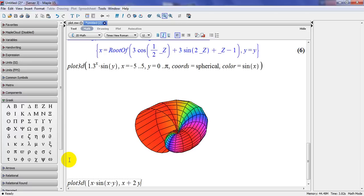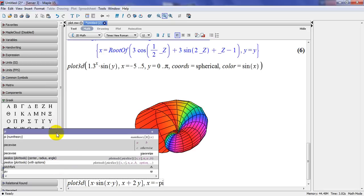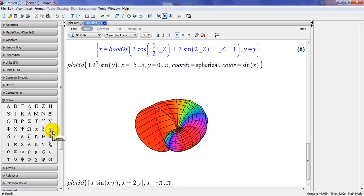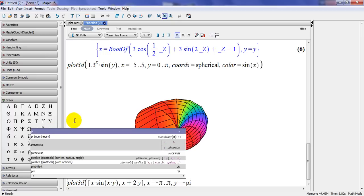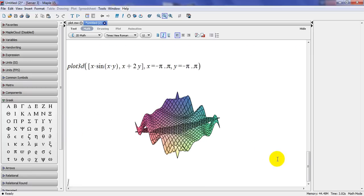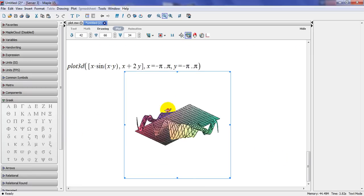And the range. X is equal to minus pi to pi. And Y would be the same thing. Minus pi to pi. And this is what I have here. So I have two functions here.